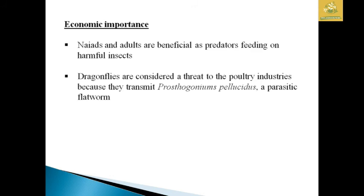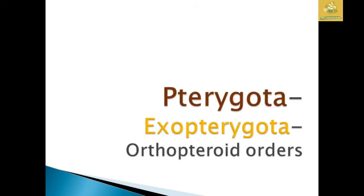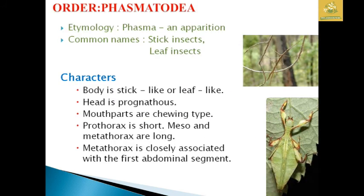Next we are going to see about the order Phasmatodea. The etymology: 'Phasma' means an apparition. Common names are stick insect and leaf insect. The body is stick-like or leaf-like in structure. The head is prognathous and mouthparts are used mainly for chewing. The prothorax is short.